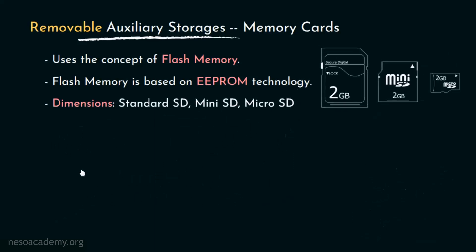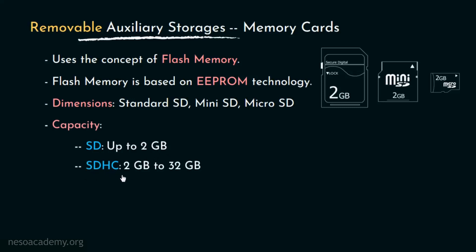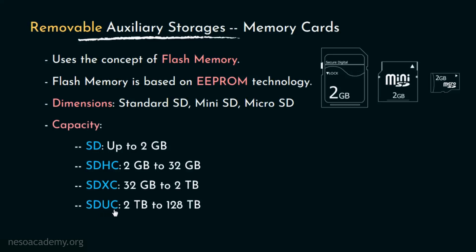Based on capacity, we can further categorize memory cards into four types. The first is Standard SD which can store up to 2GB. Next is SDHC (Secure Digital Host Controller) which can store 2GB to 32GB. Then SDXC (Extended Capacity) which can store 32GB to 2TB of data. Finally, the latest one — SDUC (Ultra Capacity) — which can store 2TB to 128TB of data and has a bandwidth of 985MB per second.